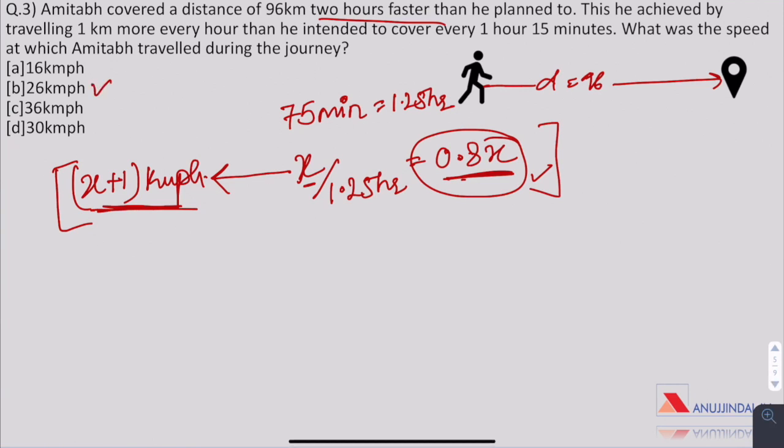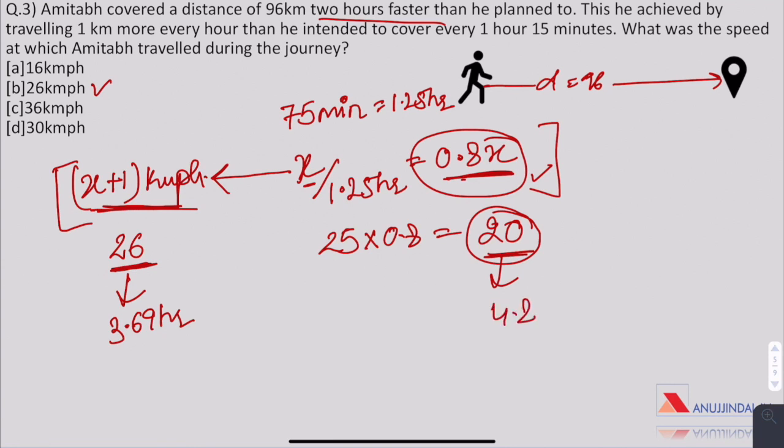So let us start with option B. If the final speed or the enhanced speed is 26, then this would have been 25 and 25 into 0.8 is 20 which is our original speed. If it was 26 kilometer per hour, then the time taken would have been 3.69 hours and here for 20 kilometer per hour, it is 4.8 hours. So clearly it is not the answer.